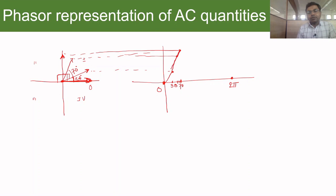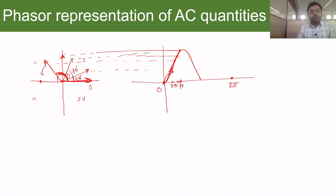If we join all those projection points, they trace out the first half of the AC sinusoidal waveform. As the phasor moves further, the amplitude projection decreases while the angle keeps increasing. Points A, B, C, D, E, and F on the phasor correspond to successive points on the sinusoidal wave.